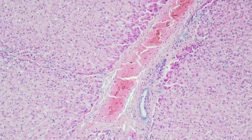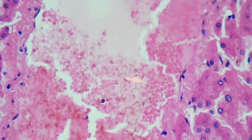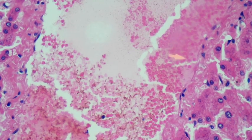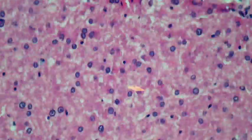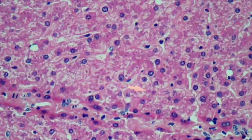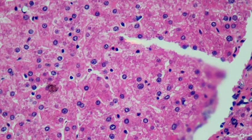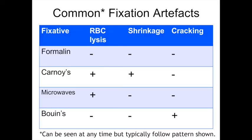At lower power, the formalin component of Bouin's is generally better at preserving red blood cells. You can see some degree of hemolysis in what appears to be a large vein, but there is certainly evidence of well-preserved red blood cells as well. So generally speaking, Bouin's shows less hemolysis and less shrinkage compared to alcohol-based fixation, but results in significant cracking. These three slides demonstrate cracking, shrinkage, and hemolysis — artifacts that can also appear in regular formalin-fixed tissue depending on how well the tissue was fixed before processing.